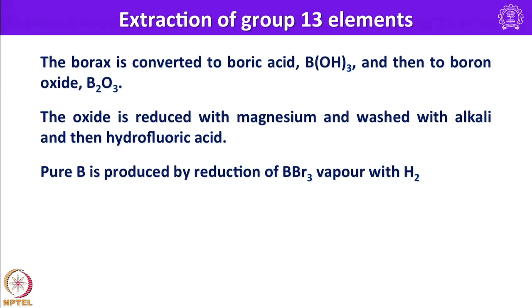For the extraction of boron, borax is first converted to boric acid by treating with sulfuric acid, and then to boron oxide, B₂O₃. The oxide is reduced with magnesium and washed with alkali and then hydrofluoric acid. For ultra-pure boron, one can prepare it by reducing boron tribromide with hydrogen in the vapor phase: 2BBr₃(g) + 3H₂(g) → 2B(s) + 6HBr(g).